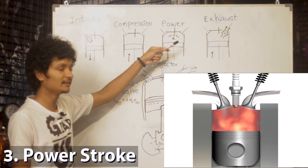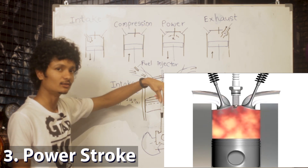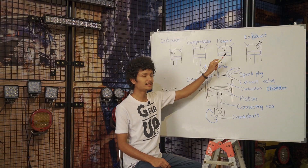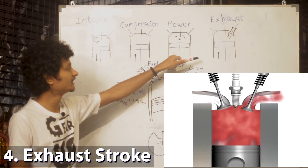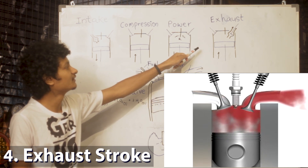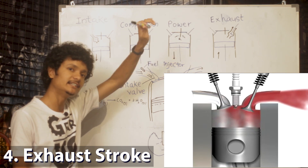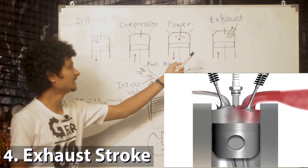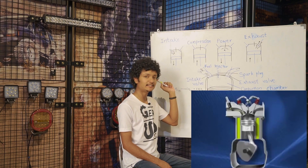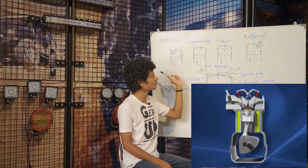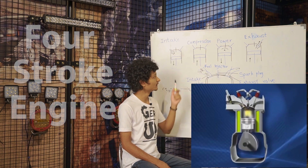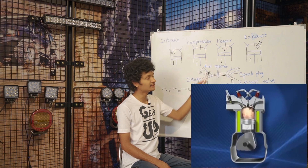The piston moves through the stroke. The exhaust valve opens to expel the burned gases. This is how the exhaust stroke works. The 4 strokes of the engine complete a full cycle, completing the crankshaft rotation.